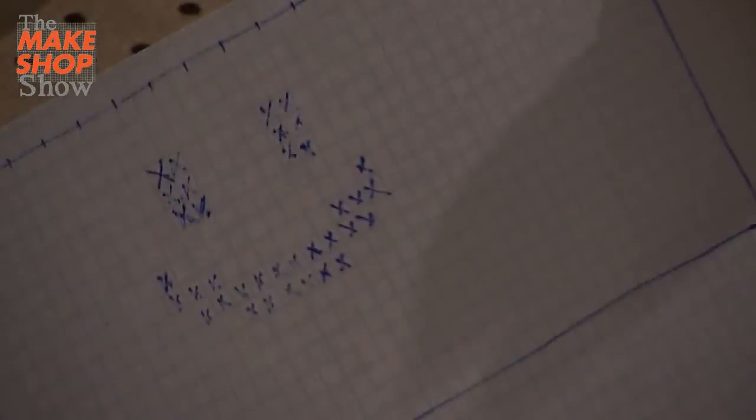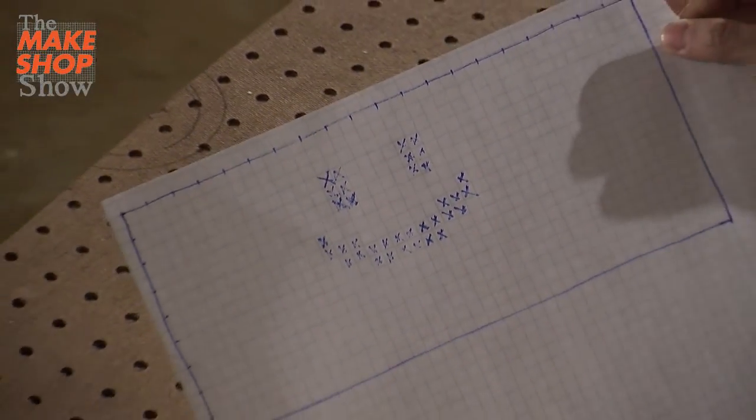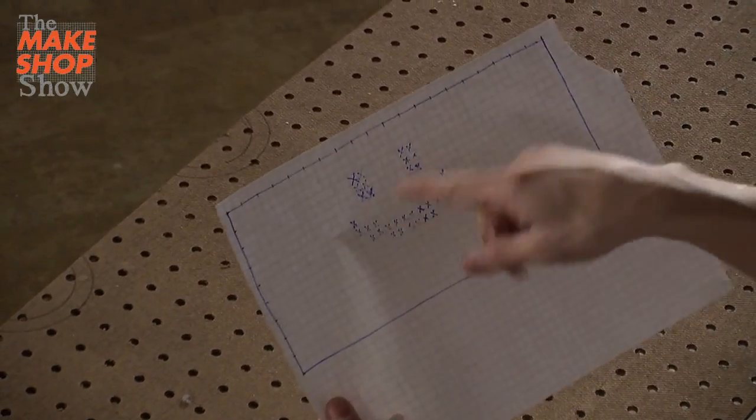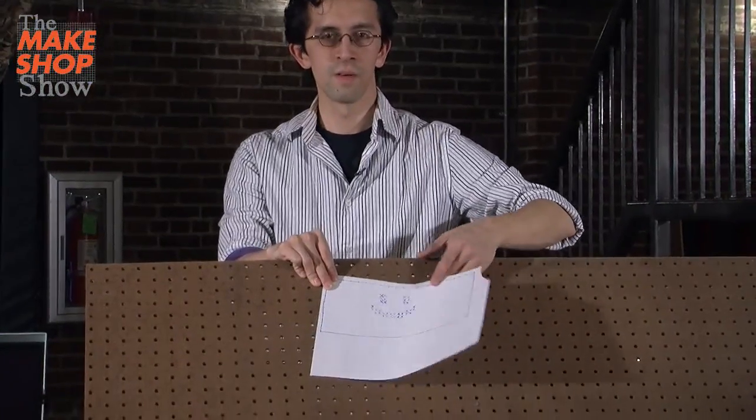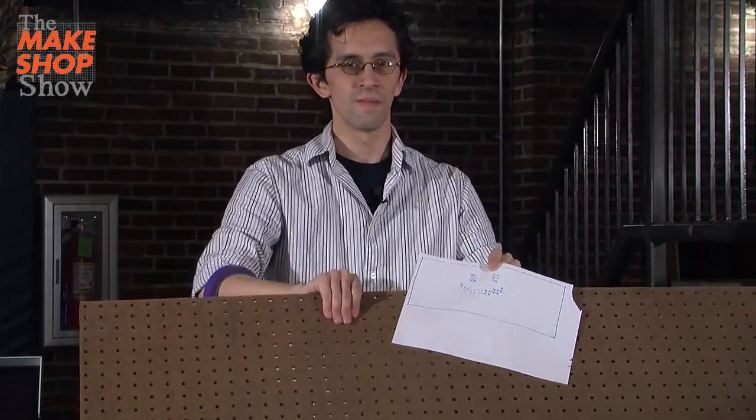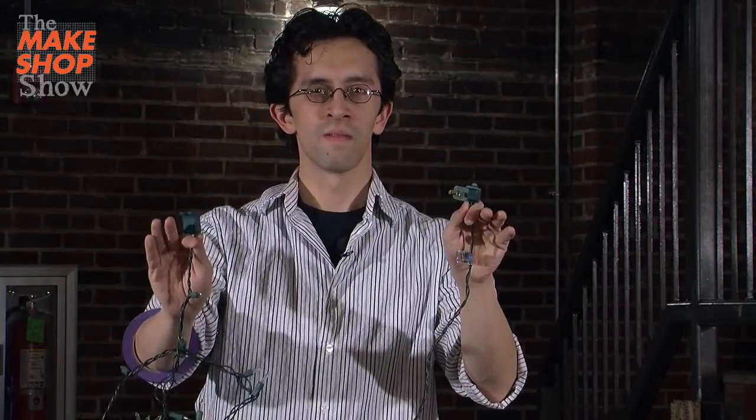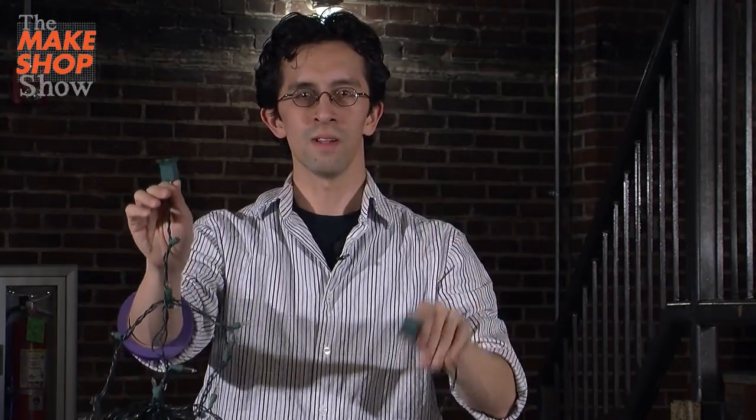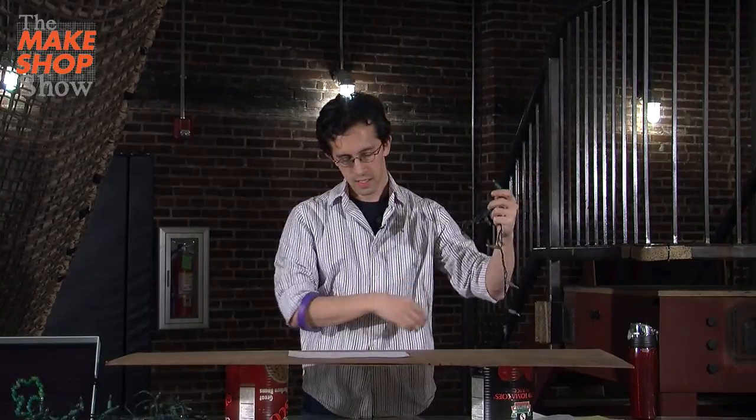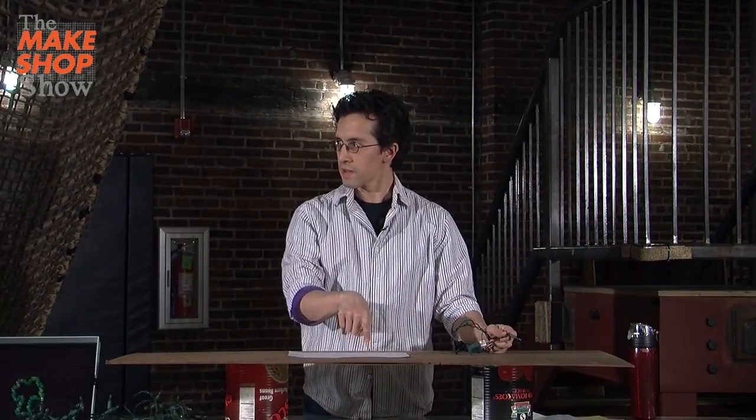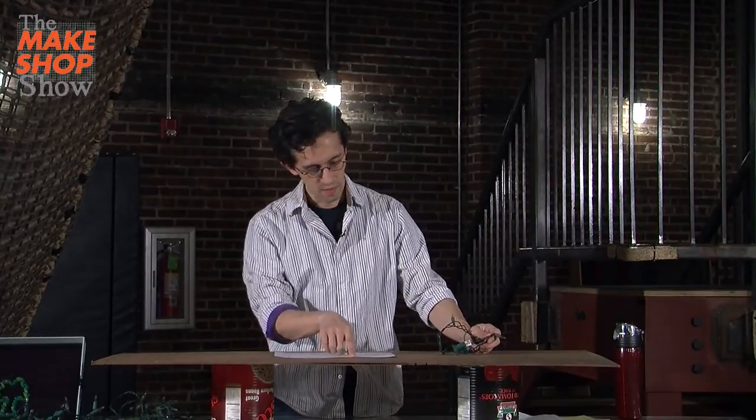So here we've got our finished pattern. We've got it all marked off. And now what we can do is start laying in our lights. No matter which kind of lights you have, we're going to start with the side that you don't plug into the wall. So we're going to count in to find that starting point.